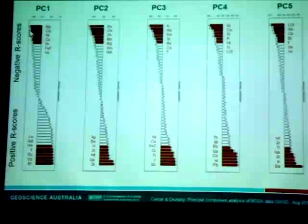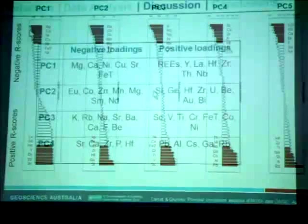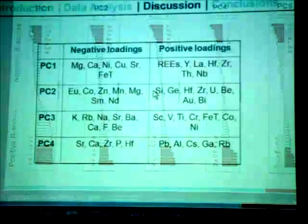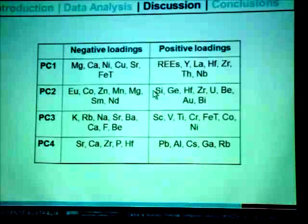What I suggest now for the rest of the time is to go over the first four principal components, show you the maps that come from rasterizing these principal components, and relate them to other geoscience datasets that provide an explanation for why these patterns are the way they are.